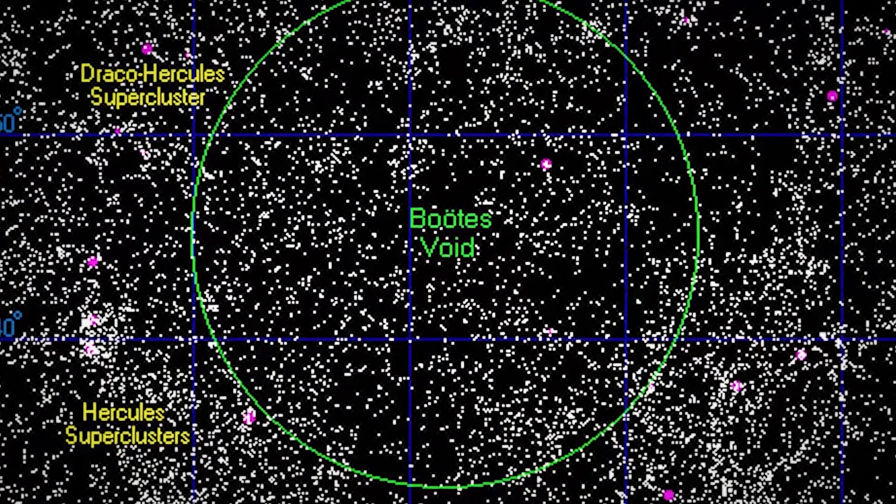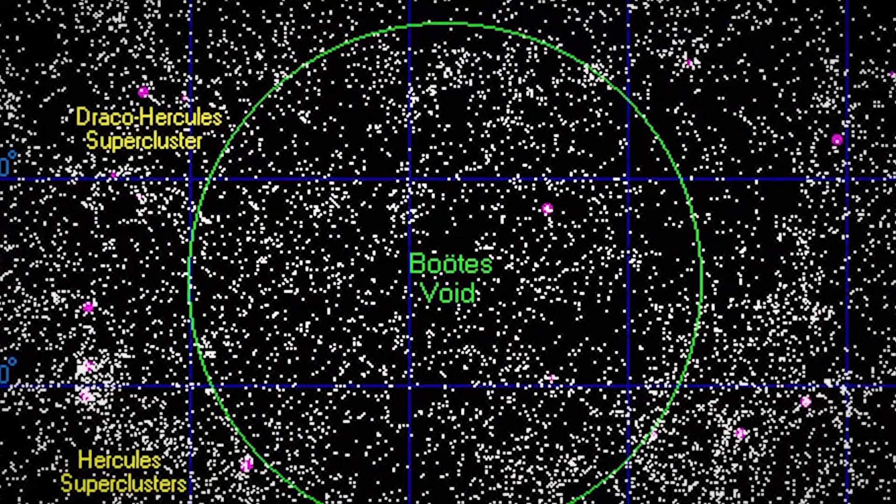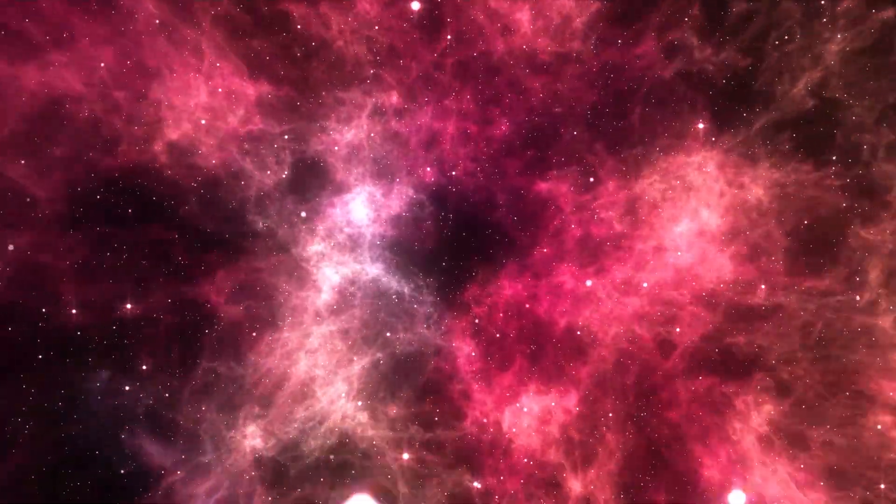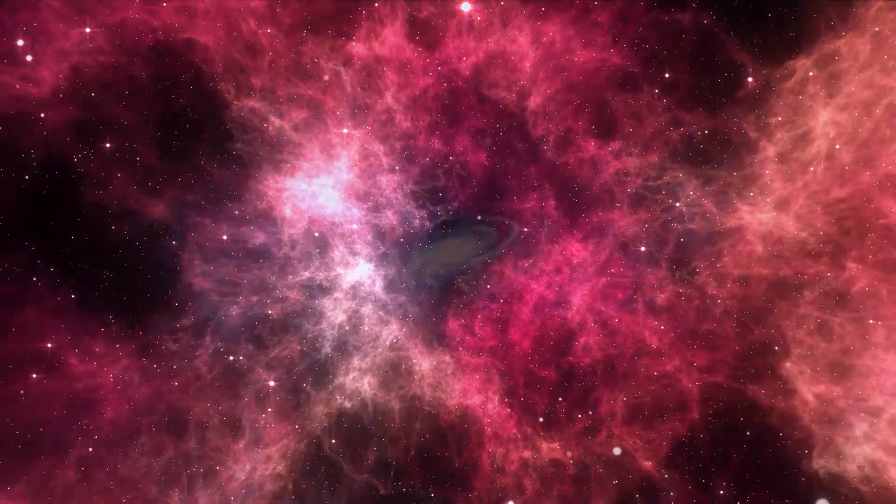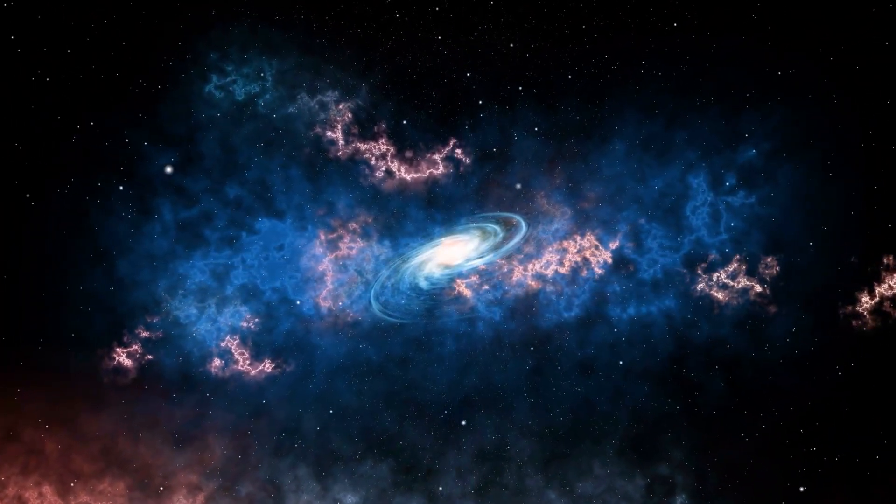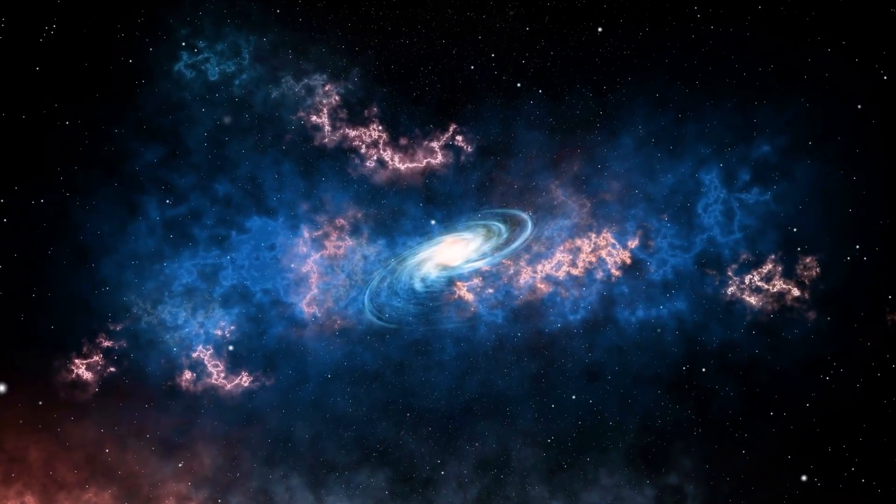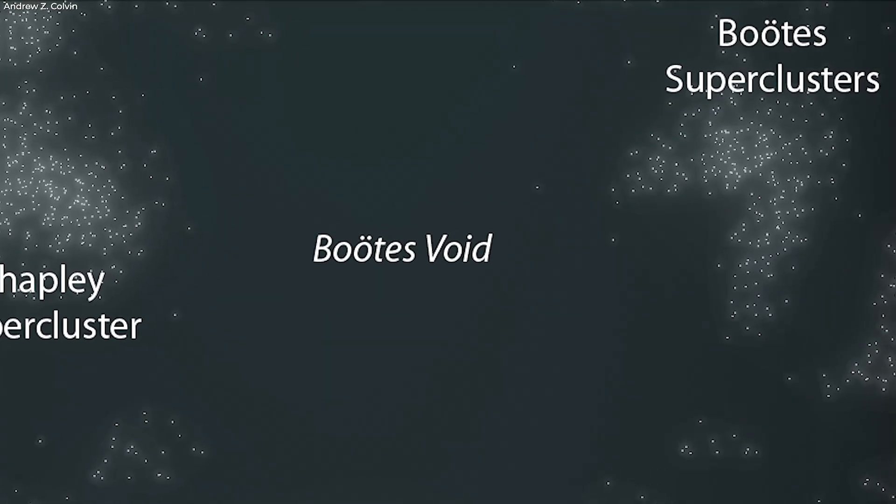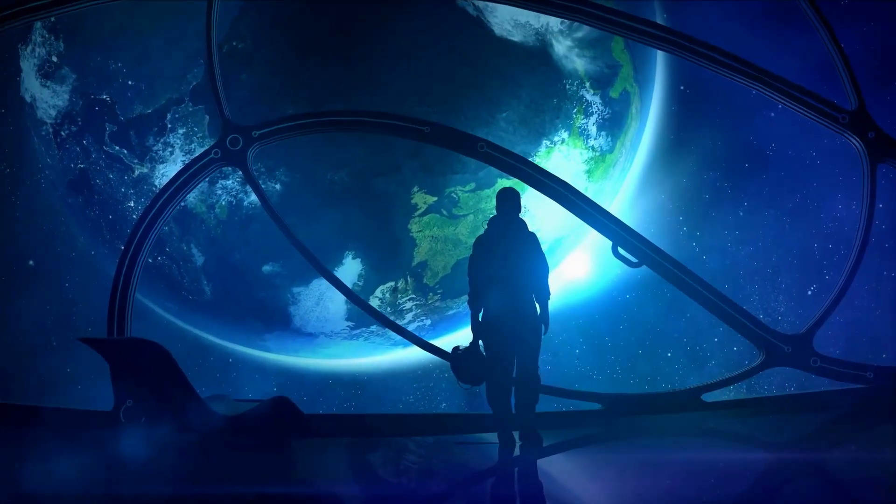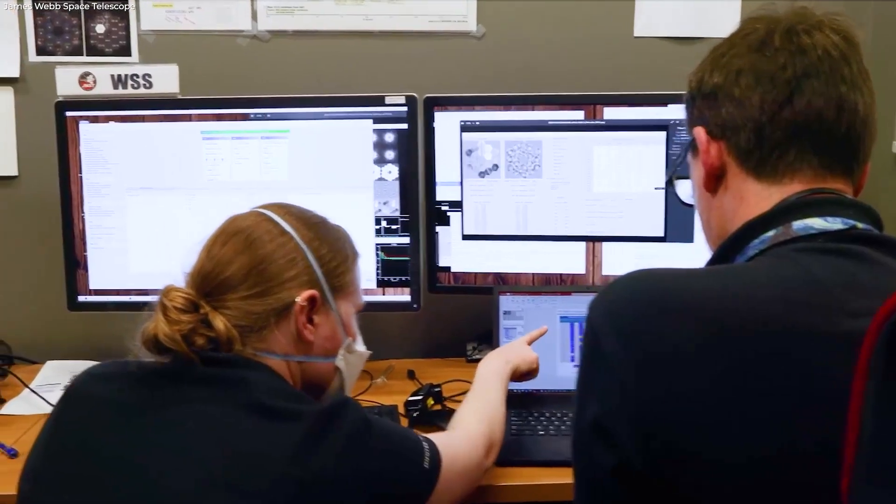In the context of cosmic voids, like Boötes void, the term 'cold' is used to emphasize the relative emptiness of these regions, where there are far fewer galaxies and cosmic structures than one would expect in other parts of the universe. So when you hear that Boötes void is cold, it means that it is an exceptionally empty and sparse region of space with a low density of galaxies and matter, not that it has a low temperature as we would understand it on Earth.